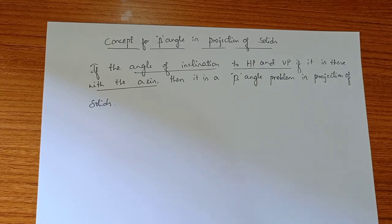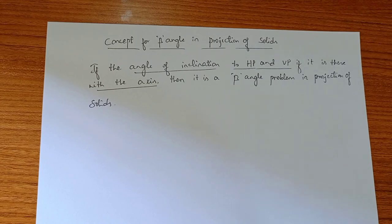The same concept is related to the prism and pyramid as well. If the angle of inclination is given with the axis for both HP and VP, then it will be a beta angle problem. The same concepts hold good for prism, pyramid, and cone.